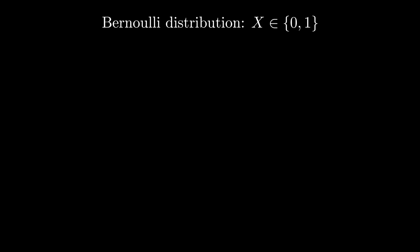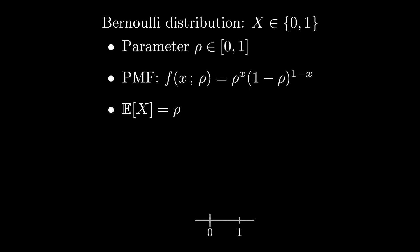Our starting point is the simple Bernoulli distribution. This is the sort of distribution you would get from a biased coin. The associated random variable takes values 0 or 1, and it has a single parameter. That parameter reflects the probability of getting a 1, and here I'm denoting it as rho.